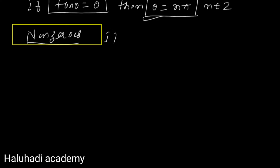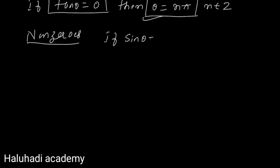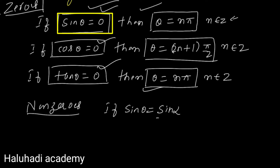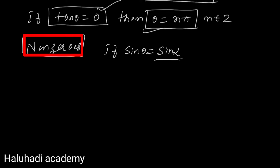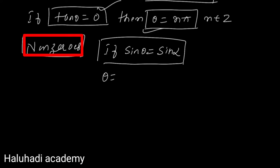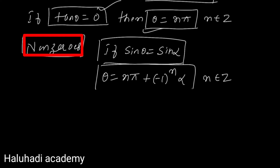For the non-zero case: if sin θ equals sin α, then θ equals nπ plus or minus (−1)ⁿ into α, where n belongs to Z. This is the general solution when sin θ equals sin α.